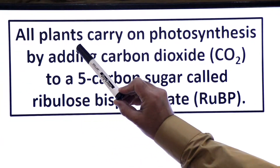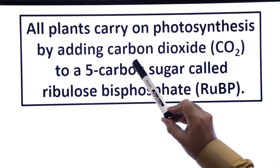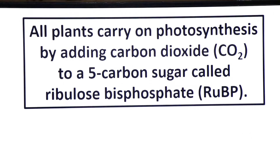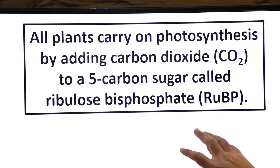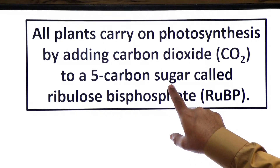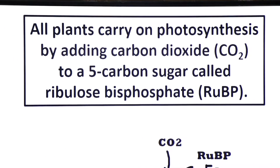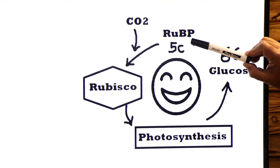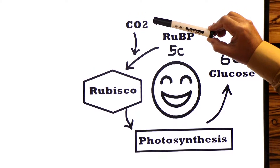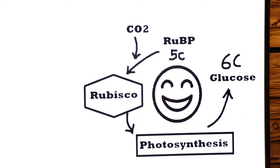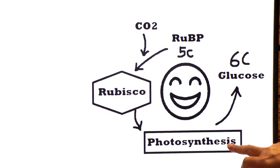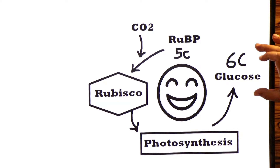All plants carry on photosynthesis by adding carbon dioxide to a 5-carbon sugar called ribulose bisphosphate (RuBP). The enzyme that does this is Rubisco, and the process that begins is photosynthesis. The product is a six-carbon glucose molecule.